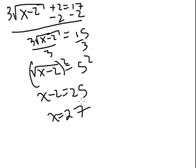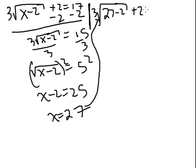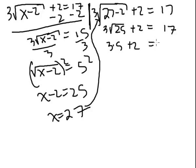And hopefully, you also know we now need to verify that this is actually a legitimate, this is a real answer. Is 3 times root 27 minus 2 plus 2. Does that equal 17? Well, we get 3 times the square root of 25. This is looking very good. Because this is 3 times 5 plus 2. And that does indeed end up equaling 17. So, 27 is a valid answer.